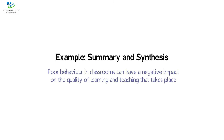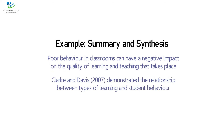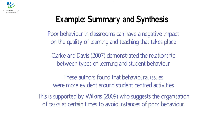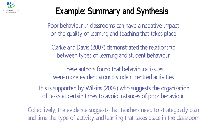Example of summary and synthesis: Poor behavior in classrooms can have a negative impact on the quality of learning and teaching. Clark and Davis demonstrated the relationship between types of learning and student behavior. These authors found that behavioral issues were more evident around student-centered activities. This is supported by Wilkins, who suggests the organization of tasks at certain times to avoid instances of poor behavior. Collectively, the evidence suggests that teachers need to strategically plan and time the type of activity and learning that takes place in the classroom.